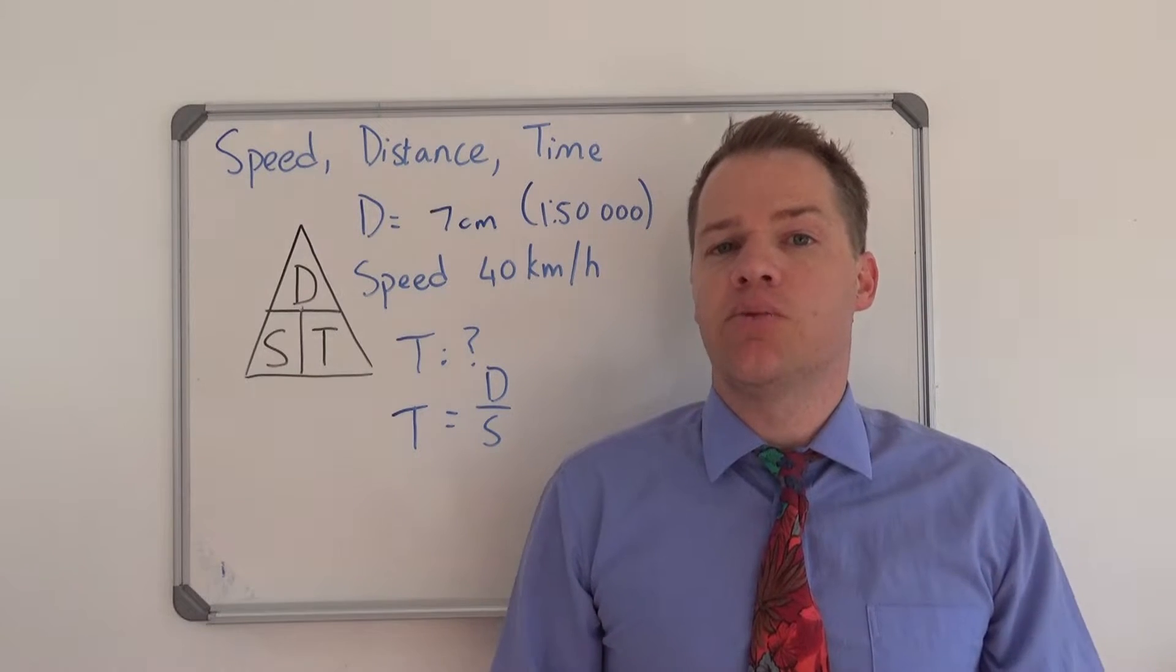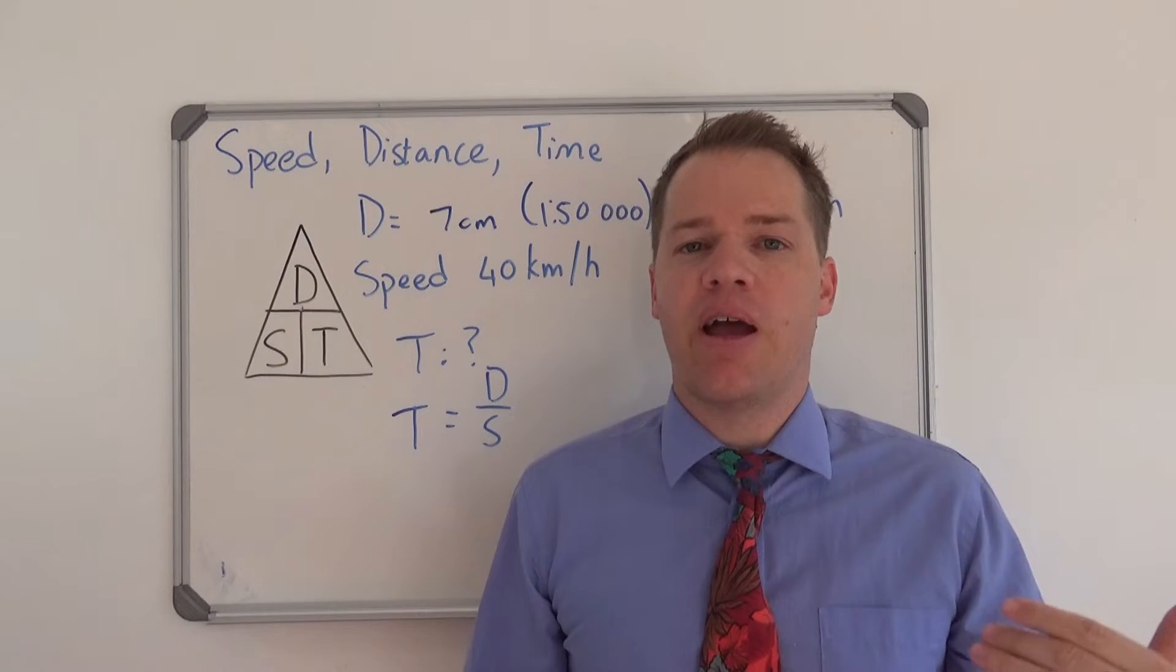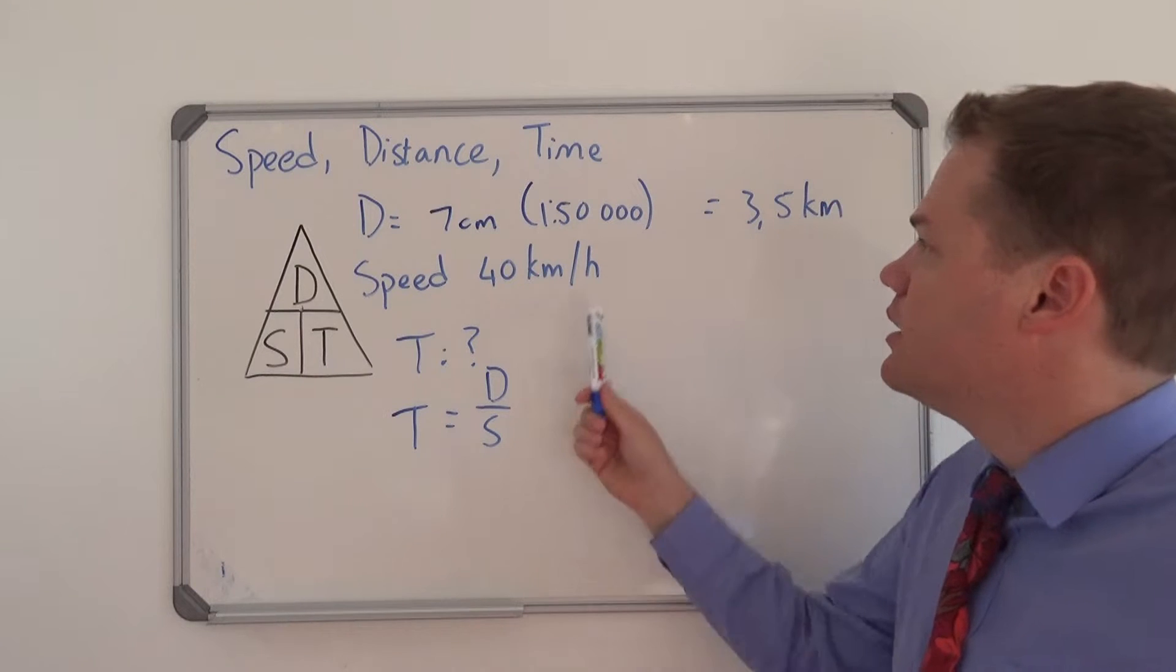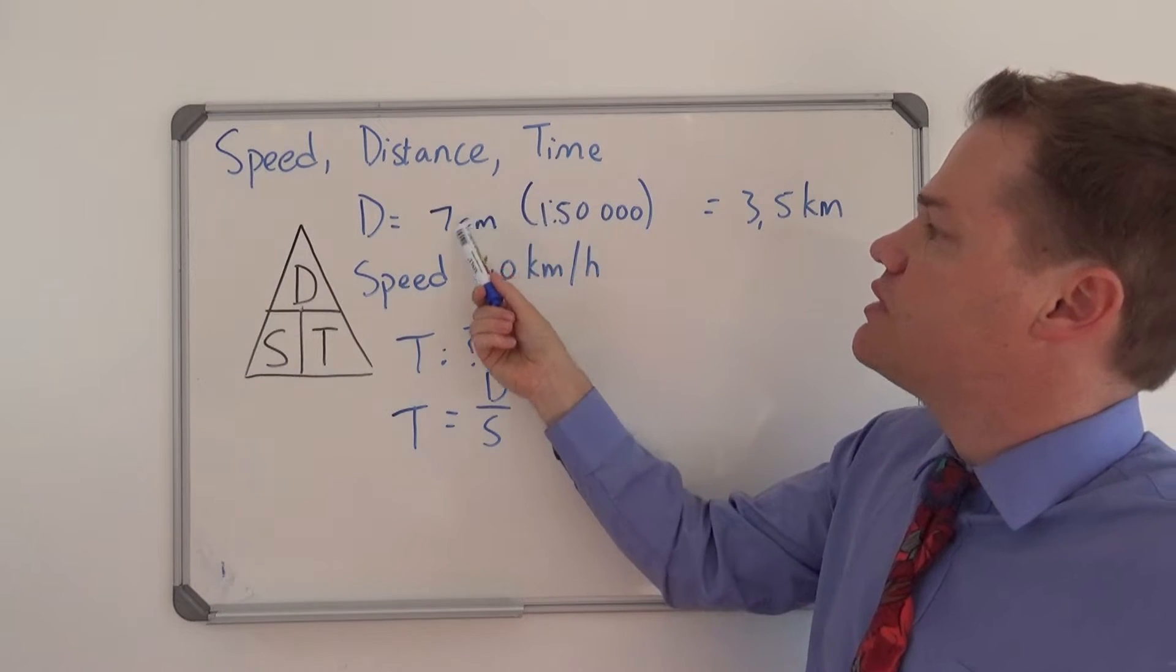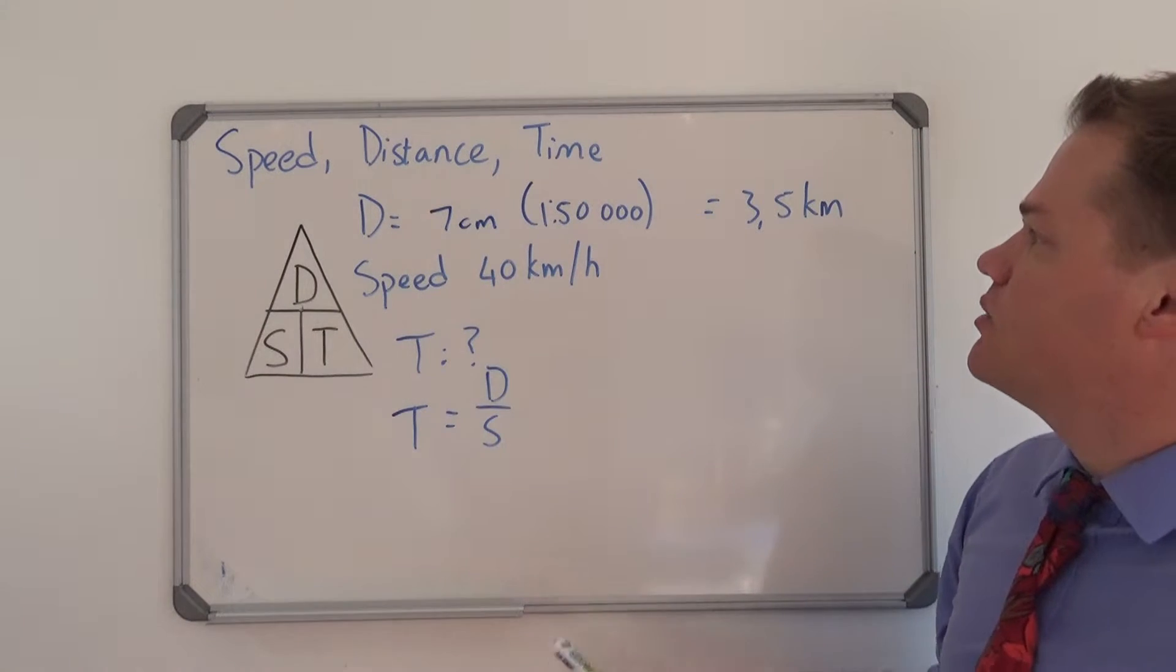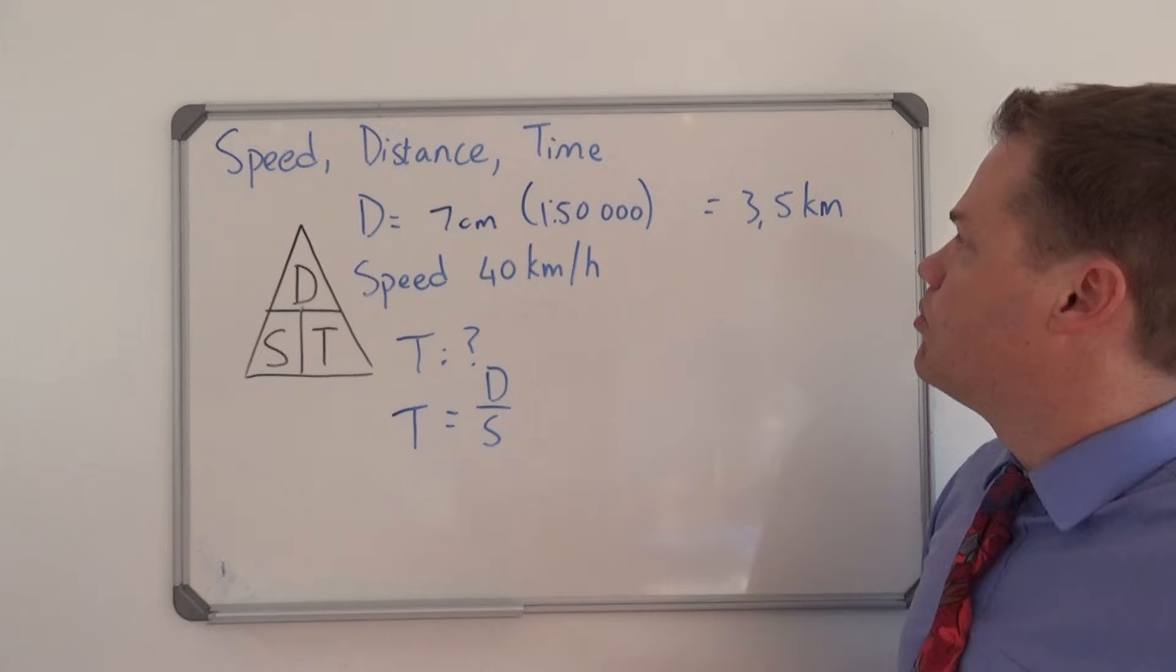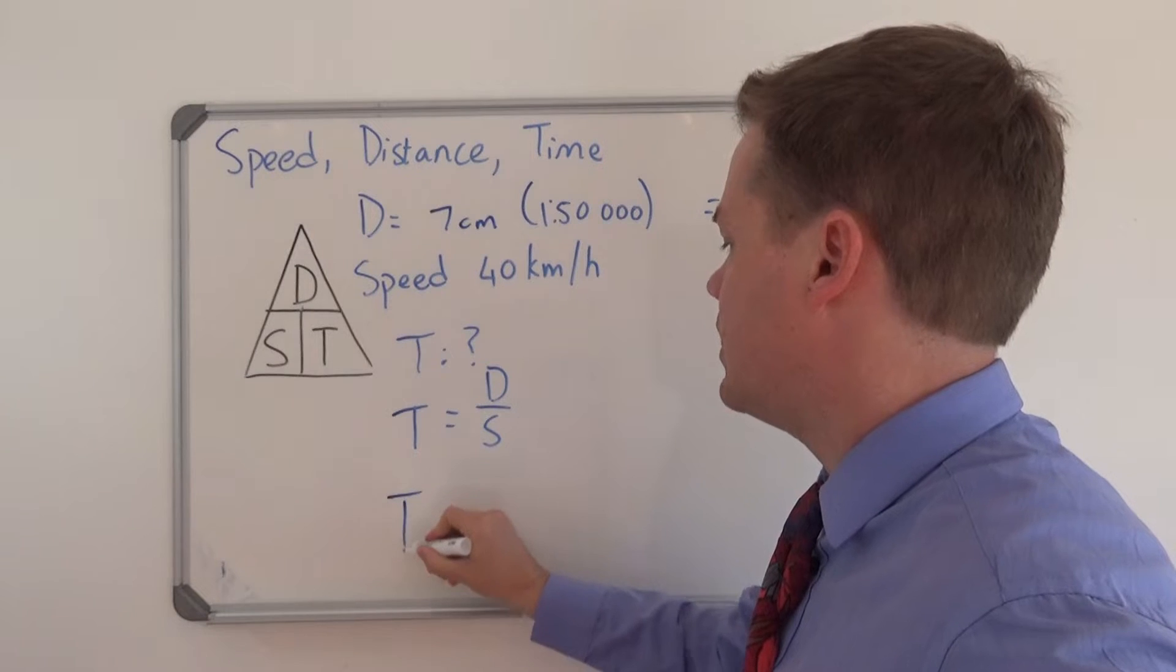I'm not going to explain it in too much detail because I've done it in one of my other videos, so click the link in the description if you need more information on distance calculation. But yeah, the scale is 1 to 50,000, so we say 50,000 times 7 divided by a hundred thousand and it gives us 3.5 kilometers.